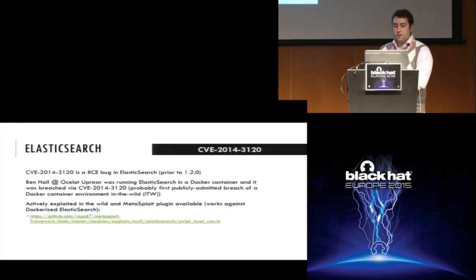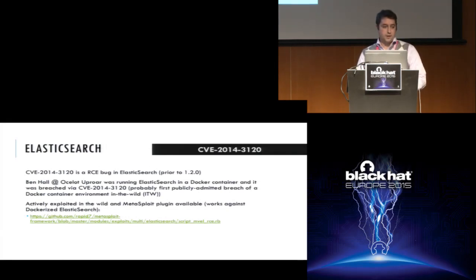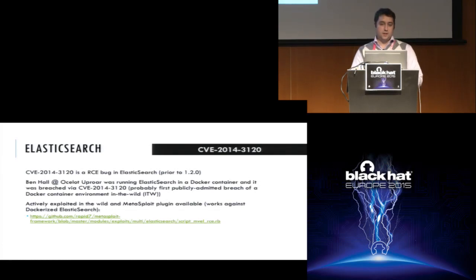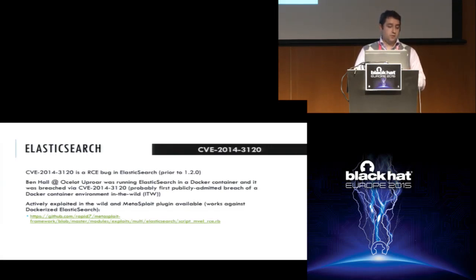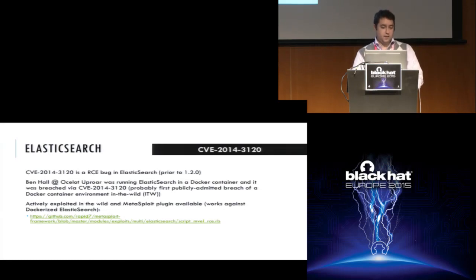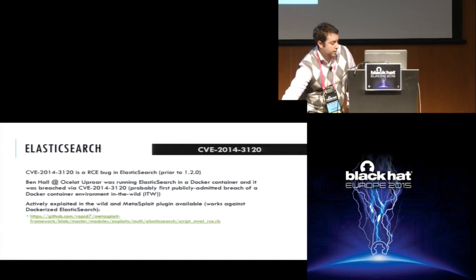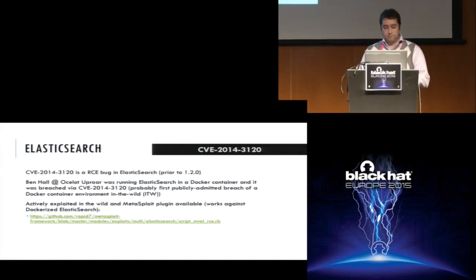This was the first concrete Docker-based breach we could find. It's a case where Ben Hall, who works at Uproar, a UK company, had turned on a Docker container running ElasticSearch. Not sure how much time elapsed, but next time he looked, the Docker container was part of a botnet. There are Metasploit plugins available for that, so it's highly likely to happen again. We're all aware that not every breach gets publicly reported, and even when it does you wouldn't always hear what software was involved or where it was in the data center.